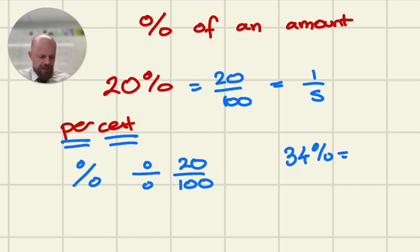34% means 34 over 100, and so on. We can use this to find percentage of an amount if you don't have a calculator.